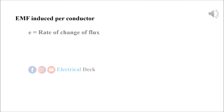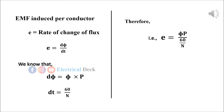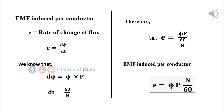From the equation of EMF induced in the conductor, dφ/dt, we know that dφ = φP and dt = 60/N. Therefore, by substituting the values, we get EMF induced per conductor: e = φPN / 60.